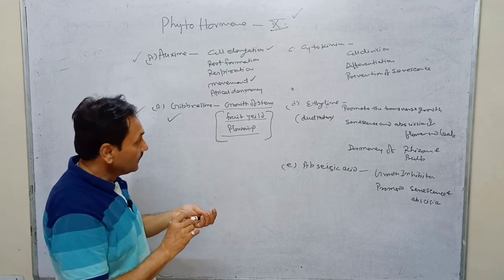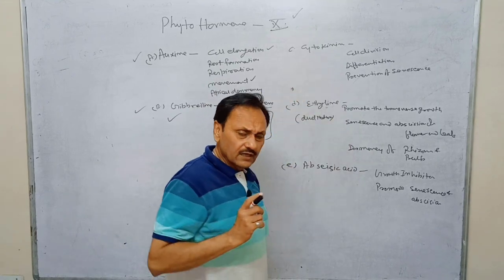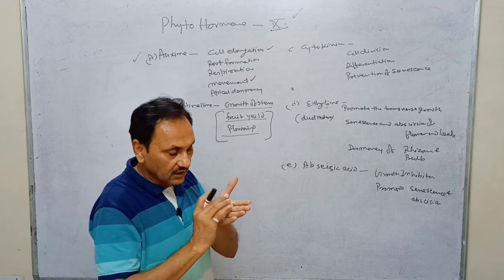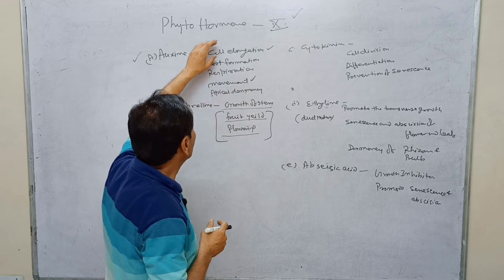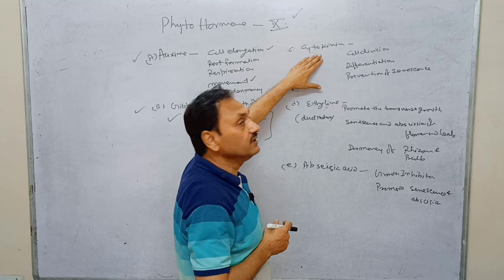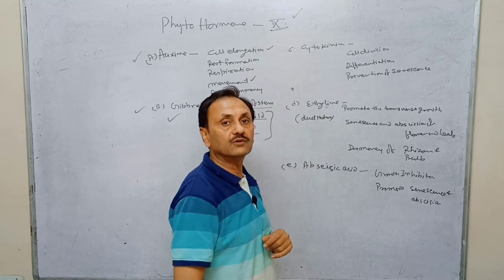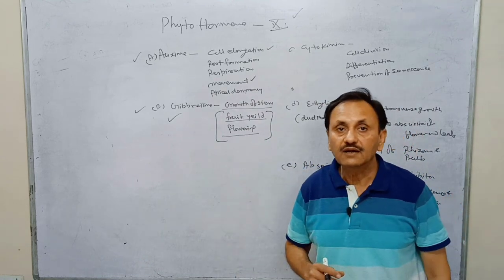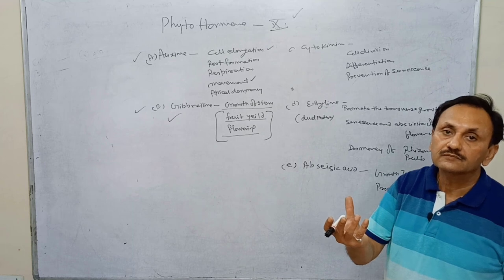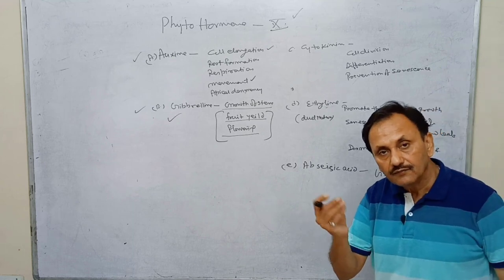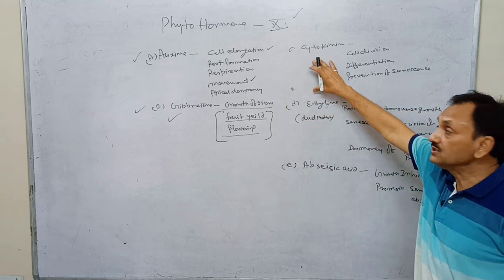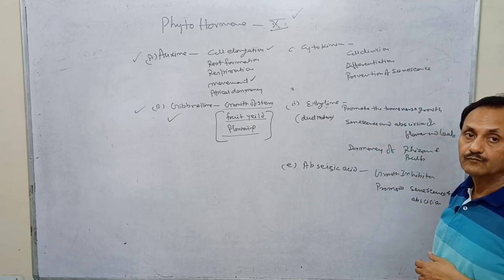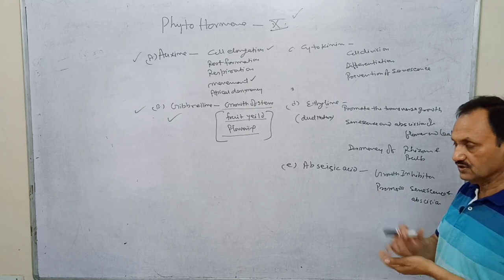In the case of cytokinin, growth takes place due to two factors: the increase in the number of cells and the elongation of cells. Elongation is controlled by auxin, while increase in cell number is controlled by cytokinin. Cytokinin and auxin together are responsible for growth. Cytokinin is also essential for differentiation — without differentiation, only an undifferentiated mass of cells forms, without roots, shoots, flowers, or fruits. Cytokinin is important for the development of different parts of the plant and prevention of senescence.